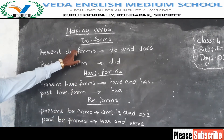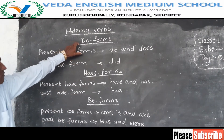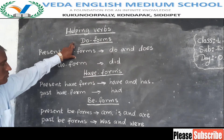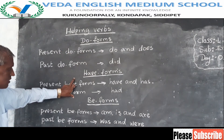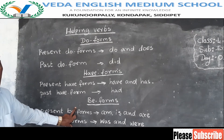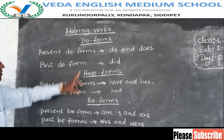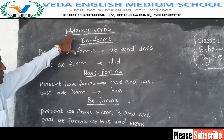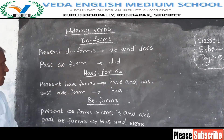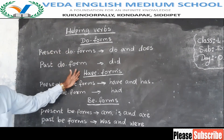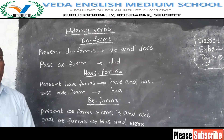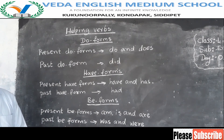So now we have seen simple tense, then perfect tense, then continuous tense. According to that, when we are using these helping verbs: do forms are always for simple tense, have forms are always for perfect tense, and be forms are always for continuous tense.